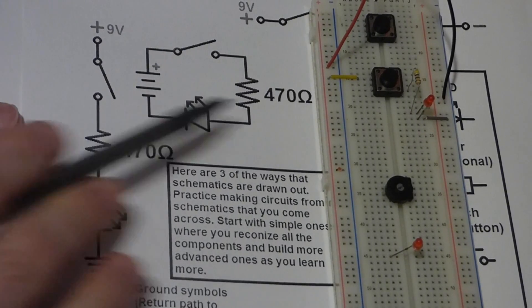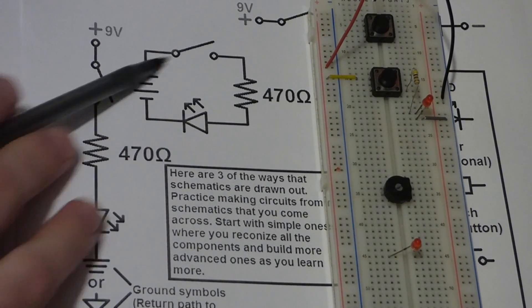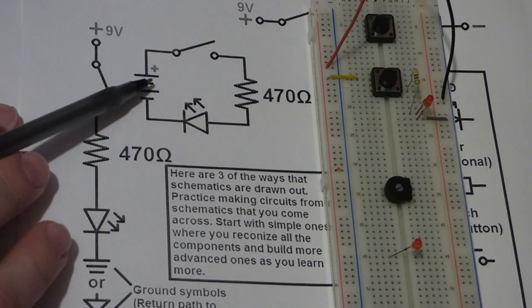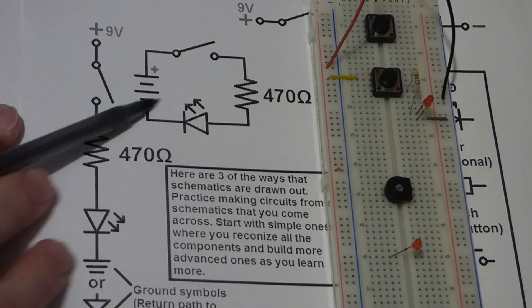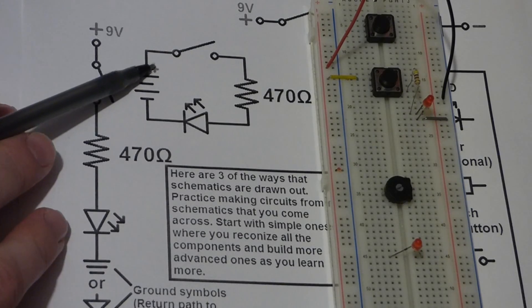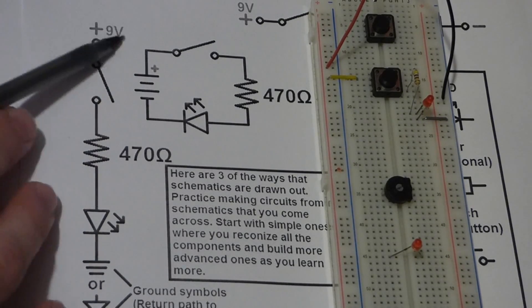Not every schematic though goes left to right. This one is actually just a square. This is really common for simple circuits especially. Here's the battery symbol. Usually it shows two cells here and then the positive side. And it usually tells the voltage.